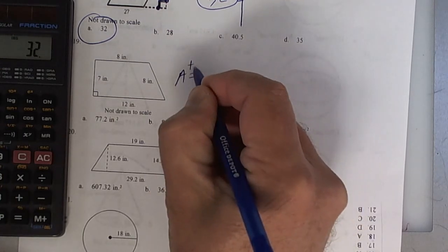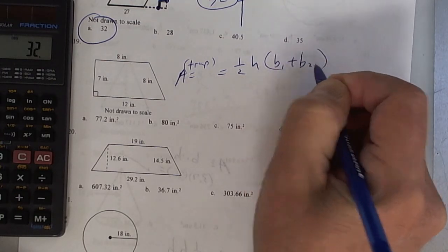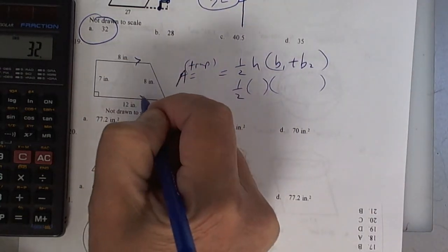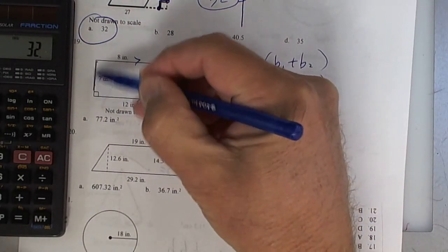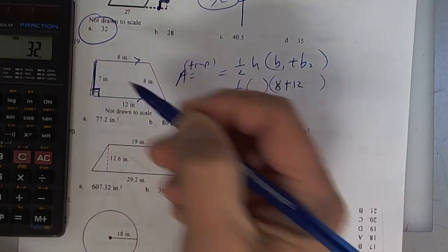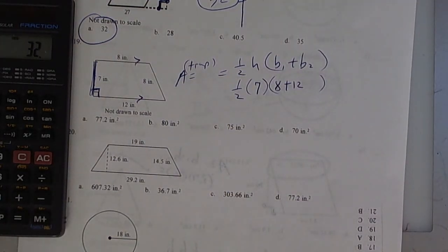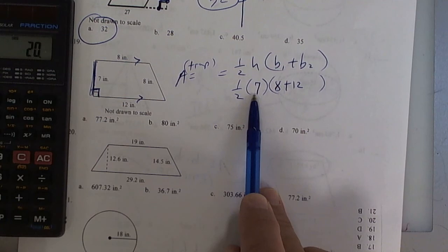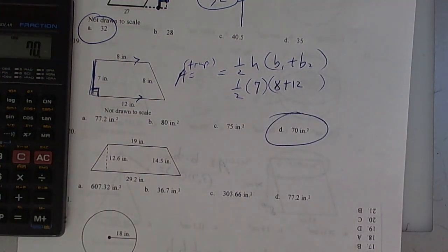Area of a trapezoid equals 1/2 the height times the sum of the two bases. The bases are the parallel sides: 8 plus 12 equals 20. The height goes from base to base — your box will tell you which one is the height; it's 7. Press 20 times 7, press equals, and divide by 2. Any questions on how to do the trapezoid?